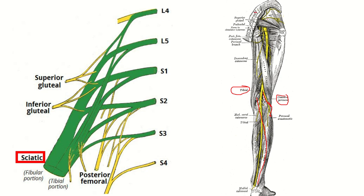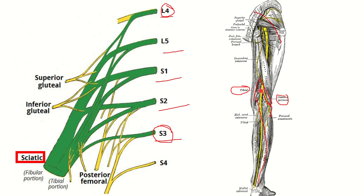The sciatic nerve is the longest nerve of the body. Here we can see the nerve root arising from lumbar 4 and ending at sacral 3. So the sciatic nerve arises from lumbar 4, lumbar 5, sacral 1, sacral 2, and sacral 3. It is also important that the sciatic nerve divides into the tibial and common peroneal nerve at the upper part of the popliteal fossa — this is an MRCS exam question so we must remember it carefully.